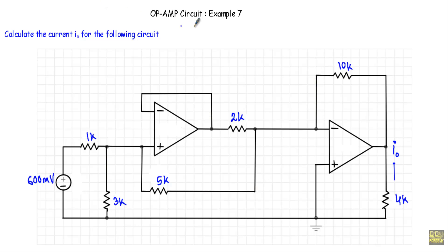In this video I will show you another example of operational amplifier circuit — this will be example number seven out of eight examples. Calculate the current I₀ for the following circuit. I have to calculate I₀ for this circuit, where I₀ is the current flowing through this 4kΩ resistor.